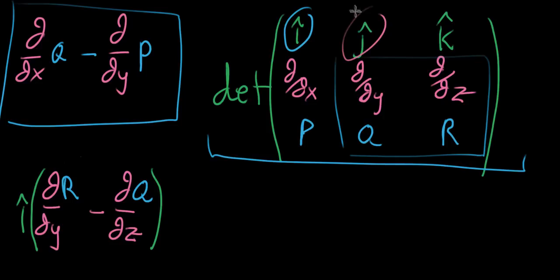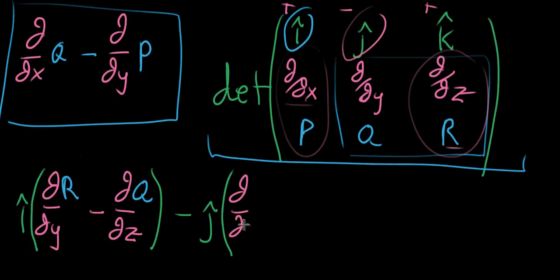And then as a second part, we take this j, and we're gonna subtract off—you're kind of thinking plus, minus, plus for the elements in this top row. So we're gonna subtract off j multiplied by another sub-determinant. And then this one is gonna involve this column that it's not part of, and this column that it's not part of, and you imagine those guys as a two by two matrix. And its determinant involves taking the partial derivative with respect to x of r, so that's kind of the diagonal—∂/∂x of r—and then subtracting off the partial derivative with respect to z of p. So ∂/∂z of p.